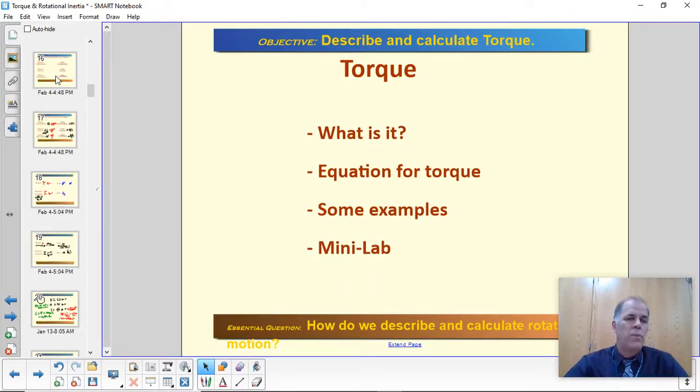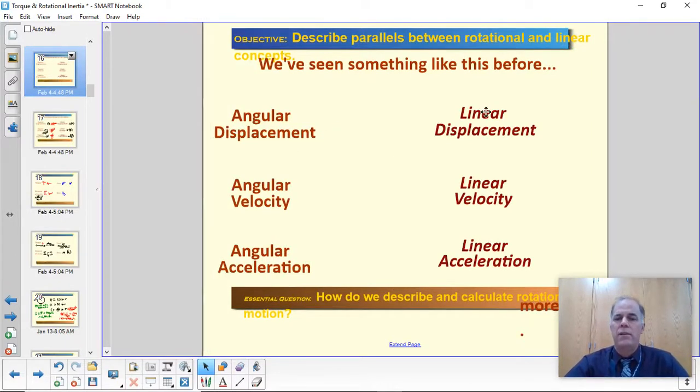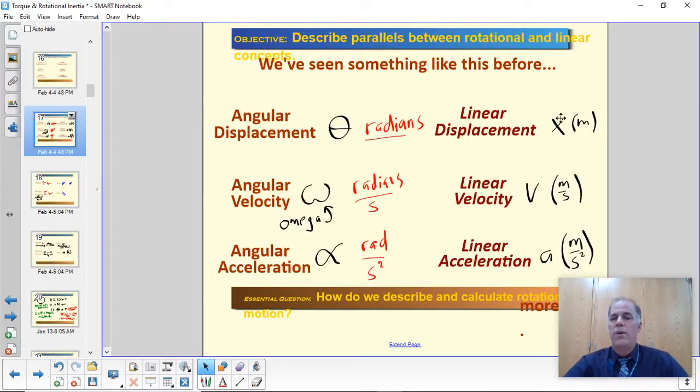So to begin here, last time we saw that linear quantities and linear concepts have analogs for rotational stuff. So linear displacement, for example, which we symbolize with X, is straight line distance or straight line displacement. And the rotational analog for that is radians of rotation, how far something turns in radians. Likewise, linear velocity in meters per second has a rotational analog of radians per second, which is how fast something is spinning.